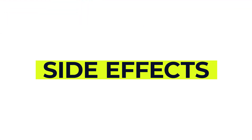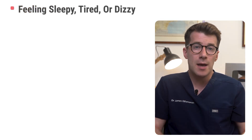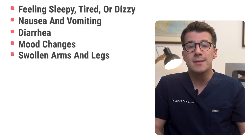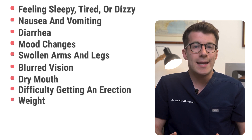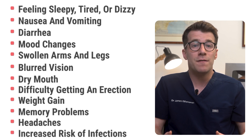Like all medications, Gabapentin can cause side effects, although not everybody gets them. Common side effects — which might happen in more than one in a hundred people — include feeling sleepy, tired or dizzy, nausea and vomiting, diarrhea, mood changes, swollen arms and legs, blurred vision, a dry mouth, difficulty getting an erection, weight gain, memory problems, headaches and an increased risk of infections. These side effects are usually mild and tend to go away by themselves, but if they persist or bother you, speak to your doctor.